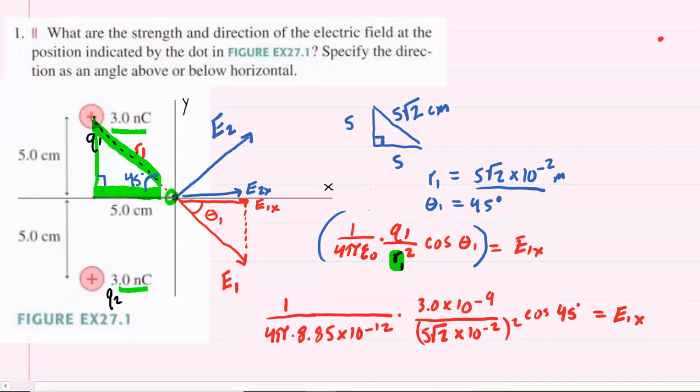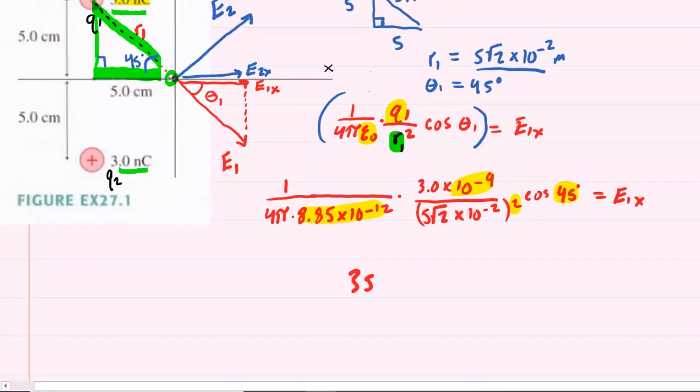So, we've gone ahead and plugged in all the known values to compute E1x. Notice a couple of things. Notice that for epsilon, we plugged in this value right here. For Q1, which was 3 nanocoulombs, we made sure to convert that into coulombs by multiplying by 10 to the negative 9. We also made sure that we squared our distance. And then we have our calculator set to degree mode. And once you plug that in, you should get approximately 3,815 newtons per coulomb for E1x. So, that gives us the x-component of E1.